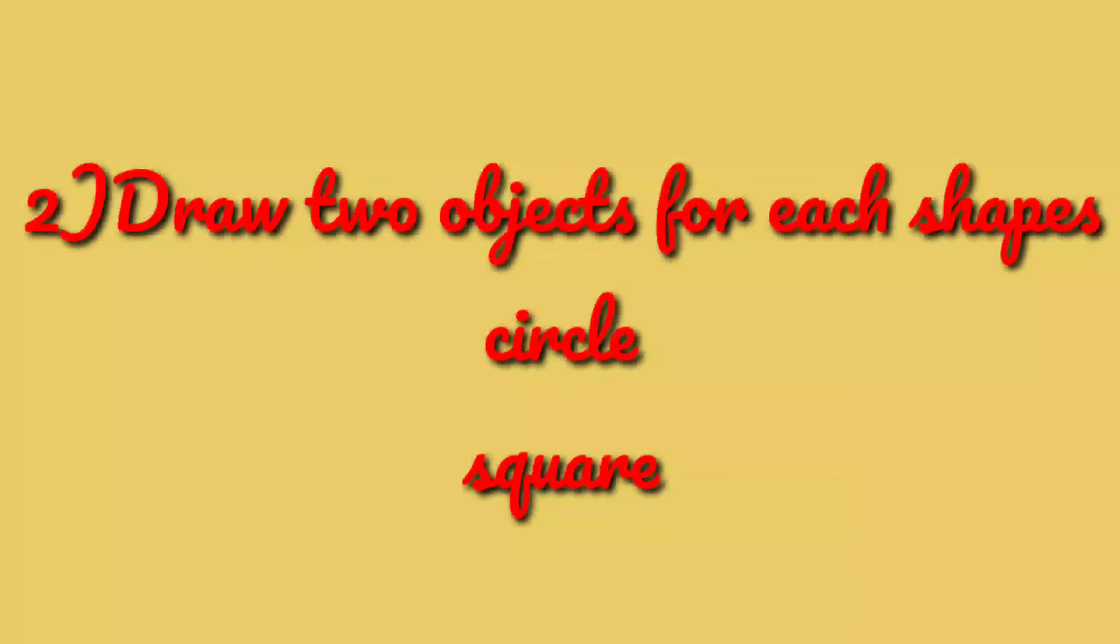Next, draw two objects for each shape: circle and square. So you have to draw two objects for circle and two objects for square, the objects which are in the shape of circle and square.